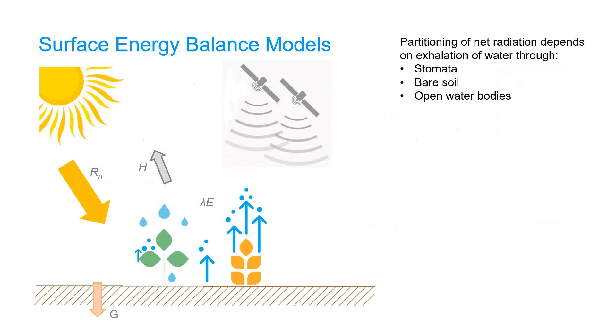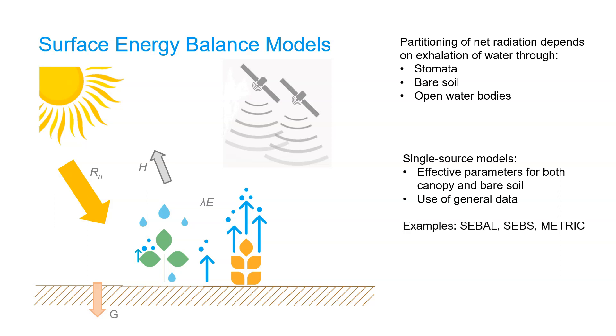Surface energy balance models need to model the partitioning of the net radiation depending on the exhalation of water through the stomata of vegetation which causes transpiration, evaporation from bare soil, and evaporation from open water bodies. Single source models simplify this by using effective parameters for both canopy and bare soil, and therefore general data can be used. Examples of these models are SEBAL, SEBS, or METRIC.